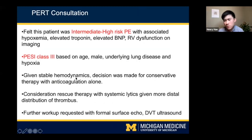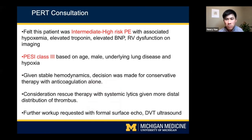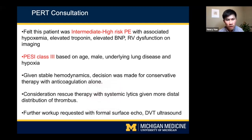In PERT consultation, the patient was felt to be intermediate-high risk for PE, given associated hypoxemia, elevated troponins, elevated BNP, and RV dysfunction noted on both bedside echo and CTPE. He was categorized in PESI class three based on age, male sex, underlying lung disease, and hypoxia. Given his stable hemodynamics, we opted for a conservative strategy with anticoagulation alone. We gave consideration for rescue therapy with systemic lytics given more distal distribution of thrombus.